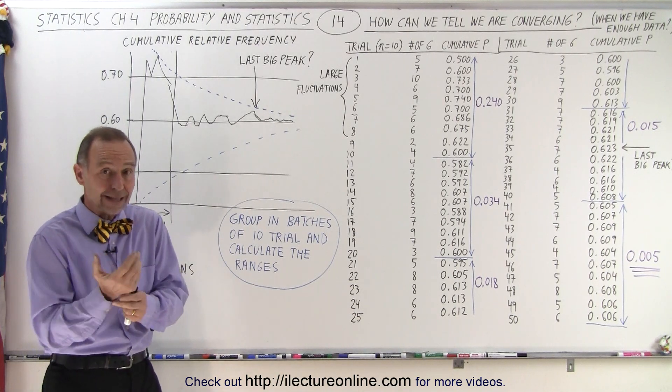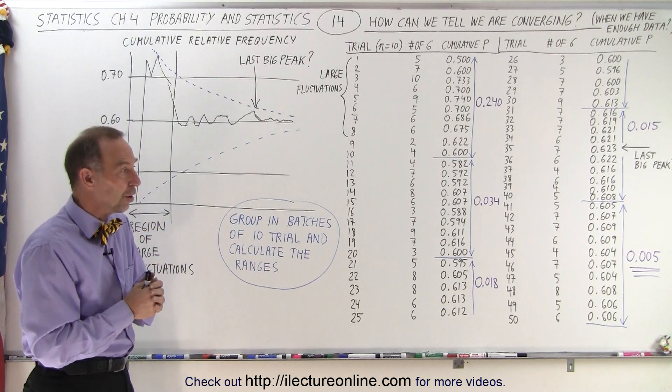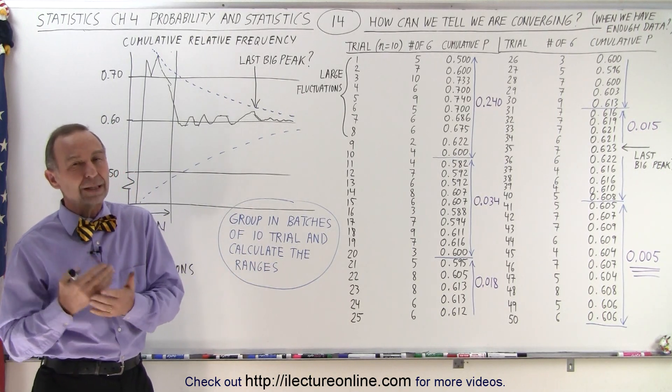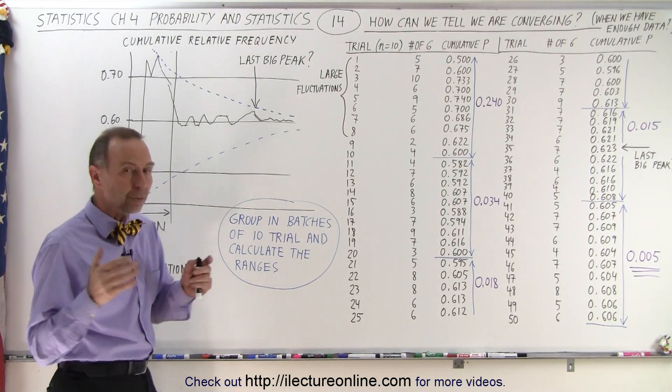After many trials of tossing the die 10 times, 50 different times, so a total of 500 tosses, we're going to get a feel for what the probability will be that we'll throw a six with this particular die.